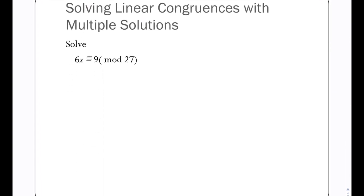6x congruent to 9 mod 27. The greatest common divisor between 6 and 27 is 3, and that does divide into 9. So we're good to go. We've got 2x congruent to 3 now mod 9.